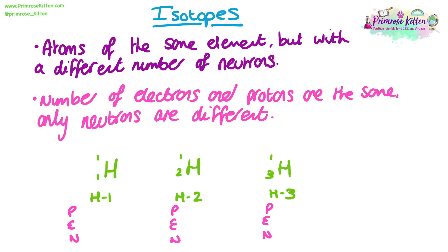Here we have an example of three different isotopes for hydrogen. You can see they have the same chemical symbol and the same atomic number, but their mass number is changing. Underneath each of these I've written PEN, which is the number of subatomic particles in each of these atoms. We're going to go through them one by one and make sure we understand what changes in isotopes.